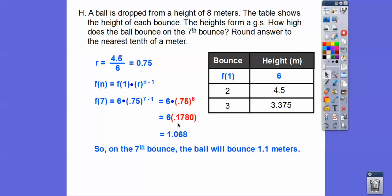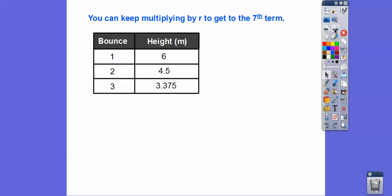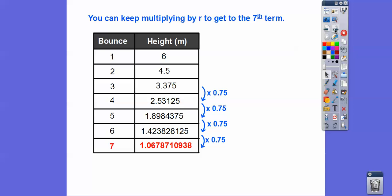If you're taking a test and don't know what to do, you can just keep multiplying by R until you get your seventh term. Since R is 0.75, multiply times 0.75, times 0.75, until you get down to your seventh term. You'll still get 1.1 — same answer.